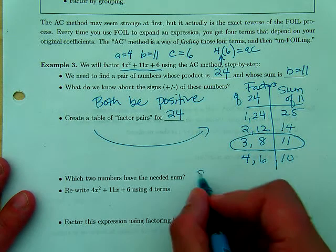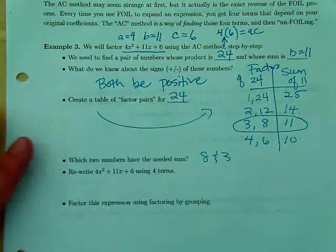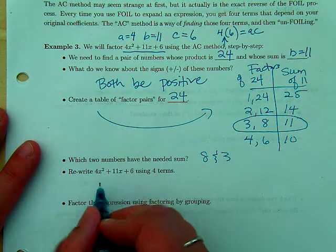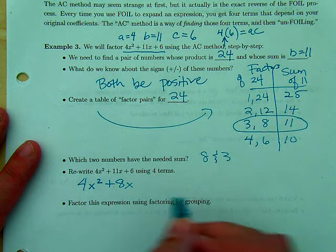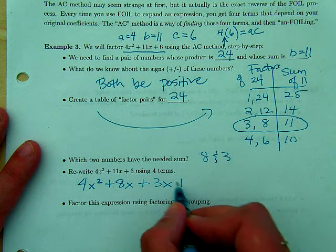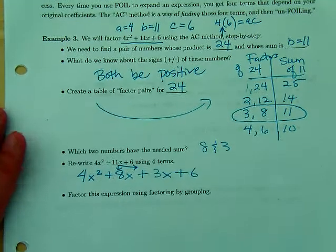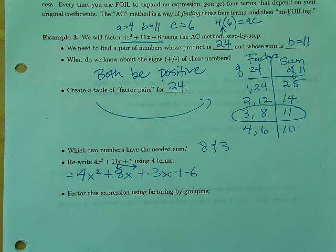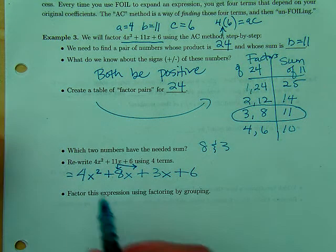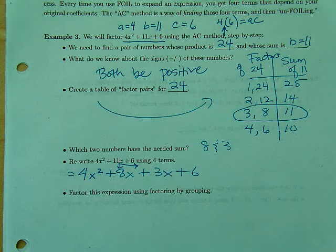Which two numbers have the needed sum? 8 and 3. Or you could say 3 and 8, right? Same thing. Rewrite this as four terms. So what that means is we're going to actually split the middle. So we're going to write this as 4x² + 8x + 3x + 6. So all we did is split the 11 into those two numbers. Aren't these still equivalent expressions? All I did was split the middle. Now that we have the middle split, the 11x, into, we're not just splitting it into 1 and 10, or, you know, any, we're not just splitting it willy-nilly. We're splitting it into the factor pairs, the two numbers.